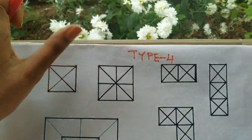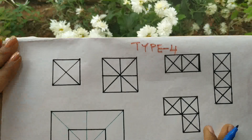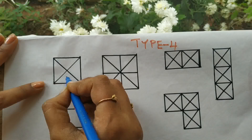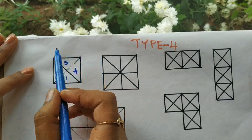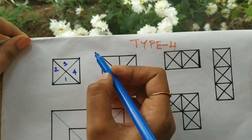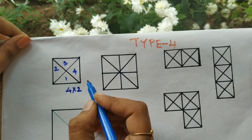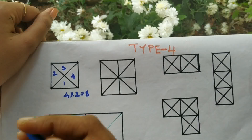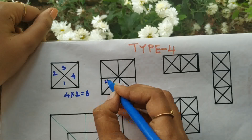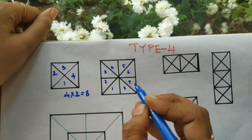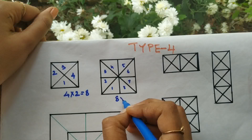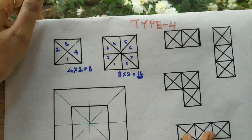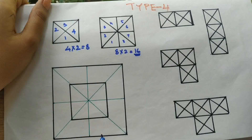Let's find Type 4. Here we have to find how many triangles are in figures with squares. Count the sections: one, two, three, four. The trick is to multiply by two when we have a square with triangles inside — so four into two equals eight. For a larger example with eight sections: eight into two equals sixteen. There are sixteen triangles in this particular figure.